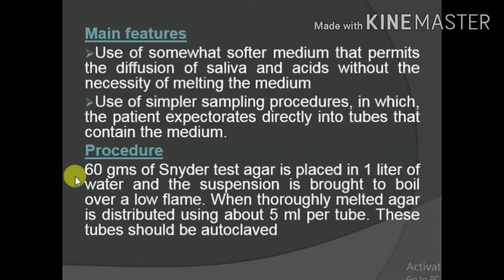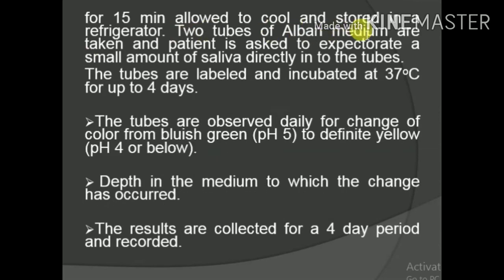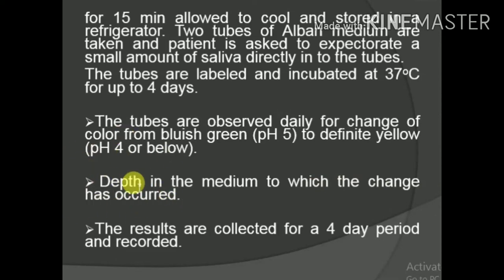In the procedure, 60 grams of Snyder's test agar is placed in one liter of water and brought to boil over a low flame. When melted, agar is distributed using 5 ml per tube; the tubes are autoclaved for 15 minutes, cooled, and stored in a refrigerator. Two tubes of Alban's medium are taken, the patient expectorates directly into the tubes, and they are labeled and incubated at 37 degrees for up to 4 days. Tubes are observed daily for color change from bluish-green to yellow, and the depth of color change is measured.